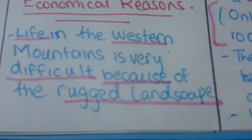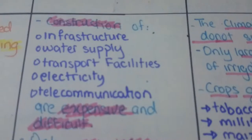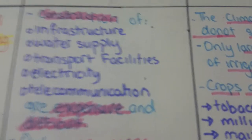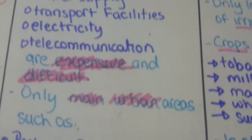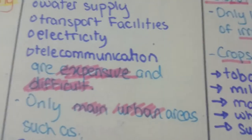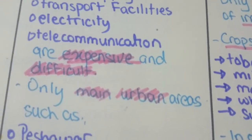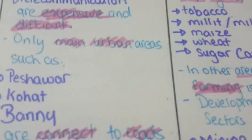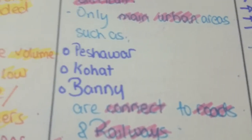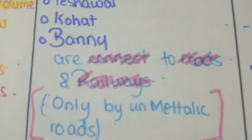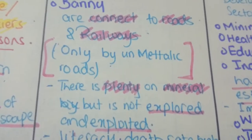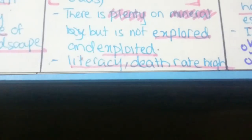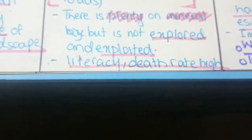Life in the Western Mountains is very difficult because of the rugged landscape. Construction of infrastructure — water supply, transport facilities, electricity, and telecommunication — are very expensive and difficult. Only main urban areas here are Peshawar, Kohat, and Bannu, and these are connected by non-metallic roads which are not very useful for trade.